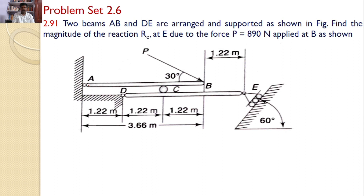Clearly we can see in the problem there are two beams AB and DE. For beam AB, A is a hinged support, and at B I can find a force P which makes an angle 30 degrees with the beam. I can also find a roller support at C. For beam DE, at D I can find a hinged support, but at E there is a roller support at an angle of 60 degrees with the horizontal. The roller at C is also attached with DE.